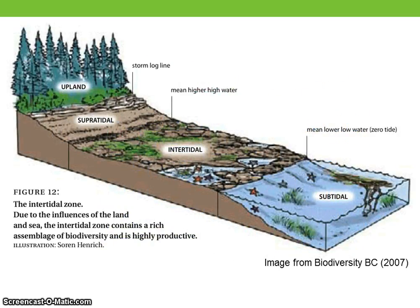Zonation is spatial change in community structure. As one moves across the landscape, the physical and biological structure of the community changes. For example, there are changes in biological structure that occur in a hilly forest, from hilltop to bottomland. These changes are referred to as zonation.